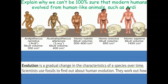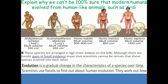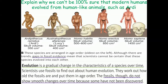However, we can't be 100% sure that modern humans evolved from human-like animals such as Ardi. We know evolution is a gradual change in characteristics of a species over time, but the problem is that there are gaps in the fossil evidence, meaning fossils don't show a smooth change over time. This could be because some fossils have not yet been discovered. The other issue is that when we find fossils, sometimes we don't find fossils of the whole organism, so we don't have a complete record of smooth changes.